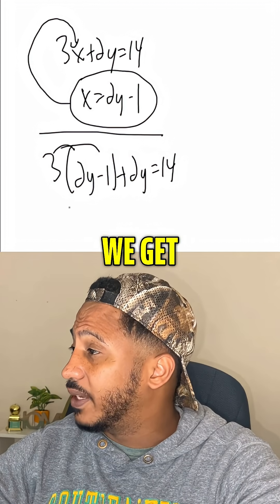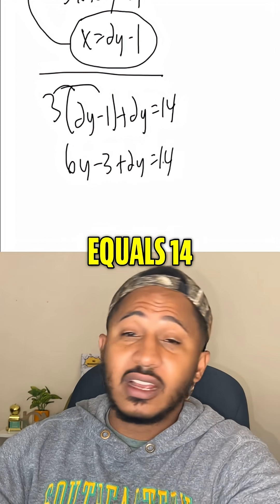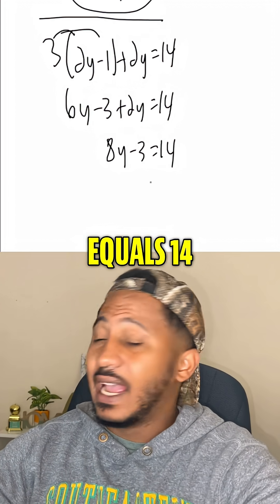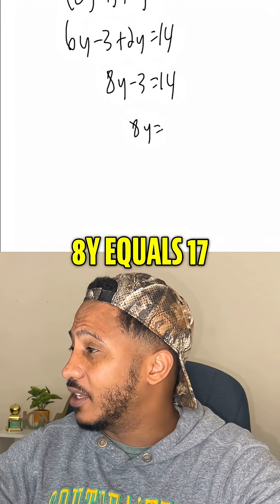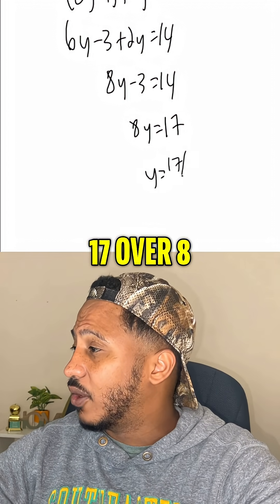Here we distribute the 3. We get 6y minus 3 plus 2y equals 14. Combining like terms, we get 8y minus 3 equals 14. Adding 3, we get 8y equals 17. Then divided by 8, we get y equals 17 over 8.